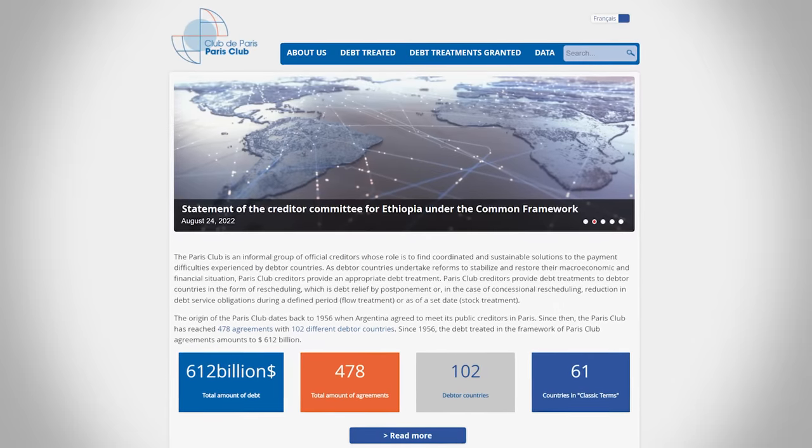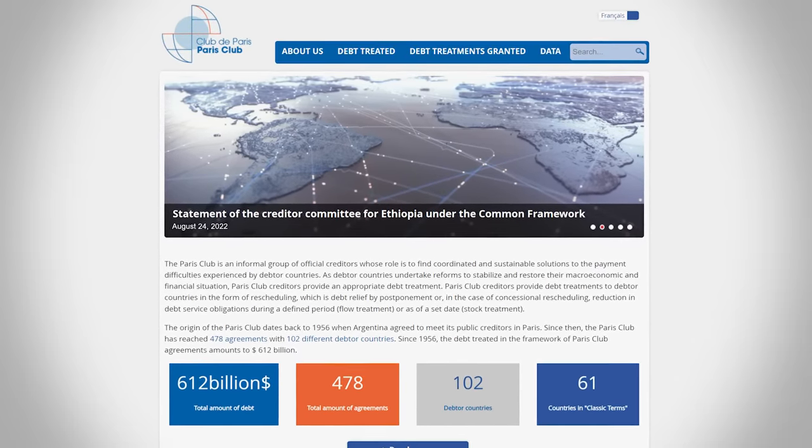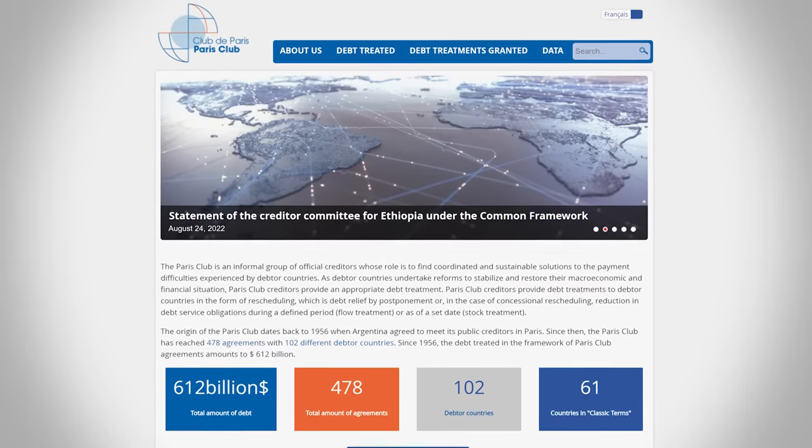but there are other institutional bodies that play a role when it comes to countries defaulting. For example, there is the Paris Club, which is a group of developed creditor nations that account for over half of poor country debts, with their objective being to coordinate responses to defaults.